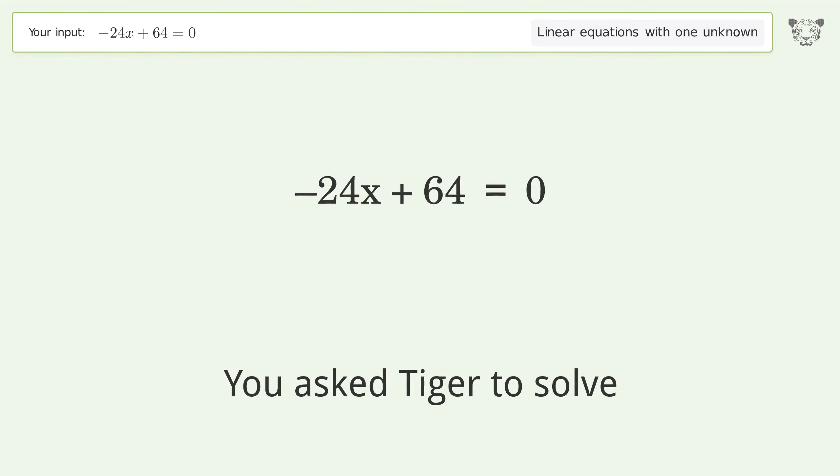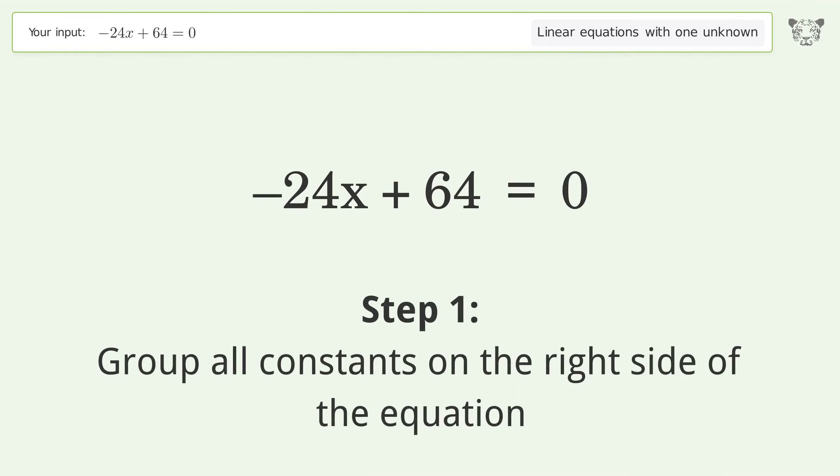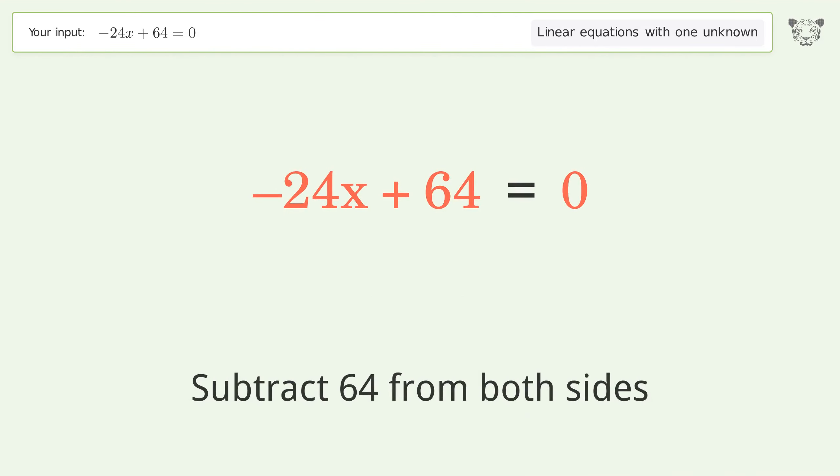You asked Tiger to solve this. This deals with linear equations with one unknown. The final result is x equals 8 over 3. Let's solve it step by step. Group all constants on the right side of the equation. Subtract 64 from both sides.